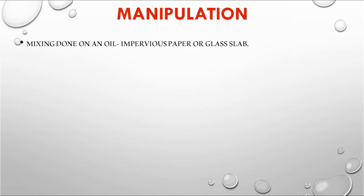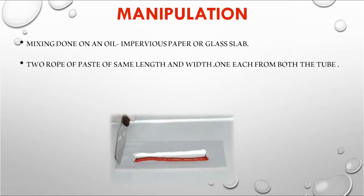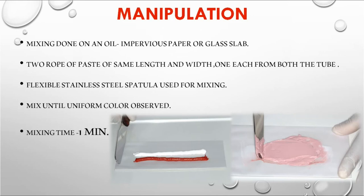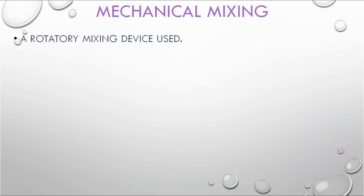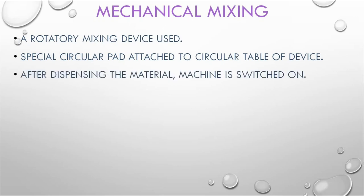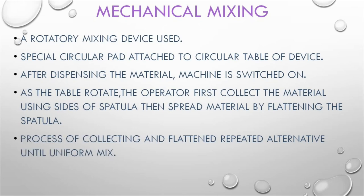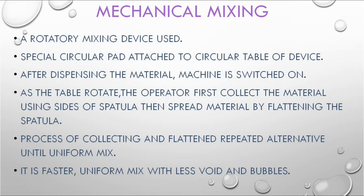Manipulation of ZOE: materials required are a glass slab or impervious paper and stainless steel spatula for mixing. Dispense catalyst and base paste in equal lengths, then mix until a uniform color is obtained — approximately 1 minute. In practical exam, the examiner checks the glass slab for uniformity of mixing. Mechanical mixing uses a rotatory mixing device with a circular pad attached; collect material using sides of spatula, spread by flattening, and repeat until a uniform mix with less voids and bubbles is obtained.